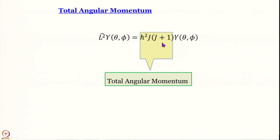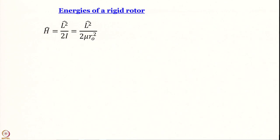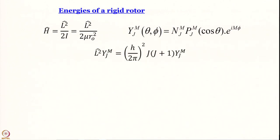The Hamiltonian was obtained by dividing the square of the angular momentum operator by 2I, where 2I is essentially a constant for the molecule. The Hamiltonian is L²/(2μr₀²). Operating on the wave function, L² gives us (h/2π)² × J(J+1). So the Schrödinger equation gives us energy as h²/(8π²μr₀²) × J(J+1), in Joules, for J = 0, 1, 2, 3...